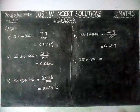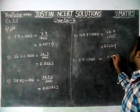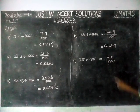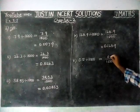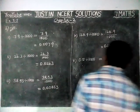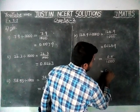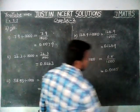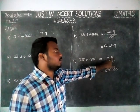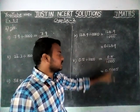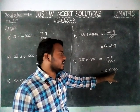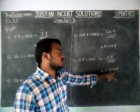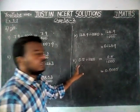Fifth question: 0.5 divided by 1000. In the denominator we have 3 zeros, so we have to move left-hand side 3 steps. We already had 1 decimal point, then we moved left 3 steps, so we added 3 zeros. The answer is 0.0005.